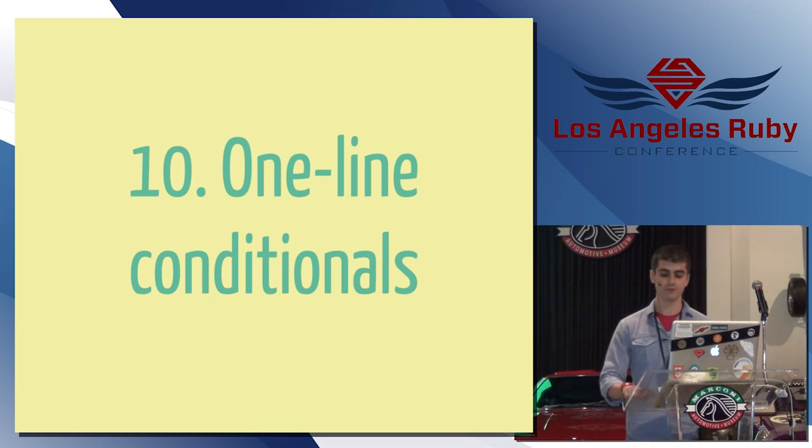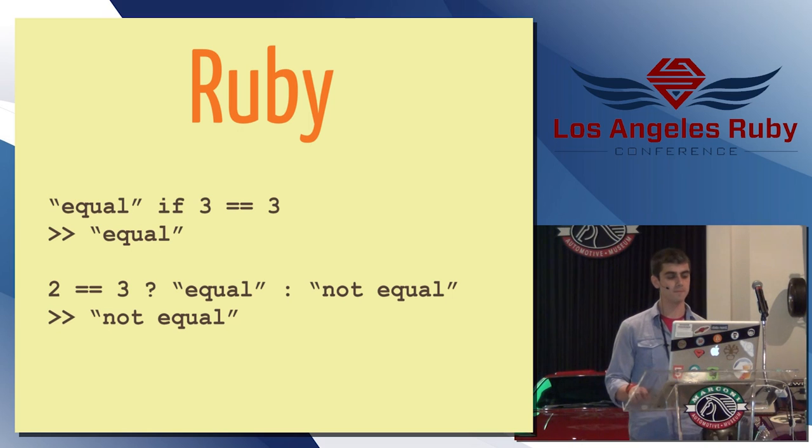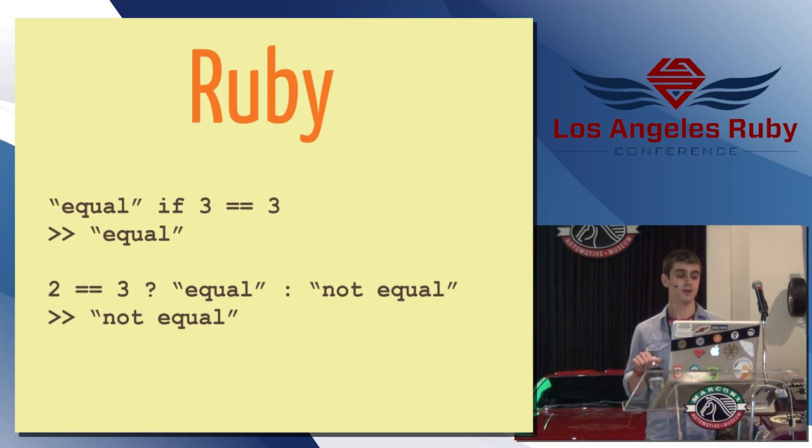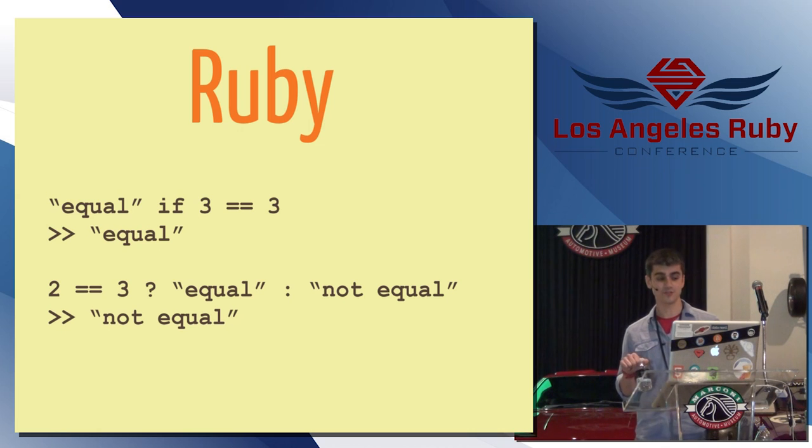Ten, each language supports some cool stuff for one-line conditionals. So, like in Ruby, you put, if you want a one-line if, you put the if at the end of the lines. You can say equal if three equals three. In this case, of course, they're equal. So, it will output equal there. And then you can use JavaScript-style syntax to have an entire if-else statement on one line. So, this one is two equal to three. If so, equal, otherwise, not equal. So, of course, this will return not equal.